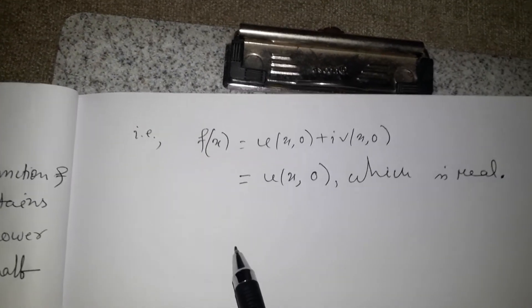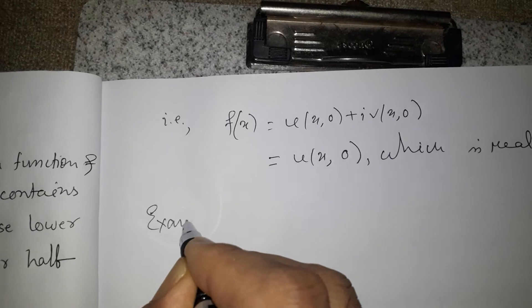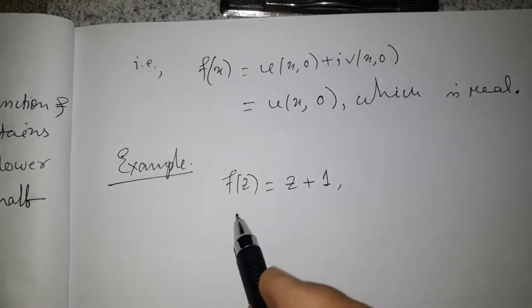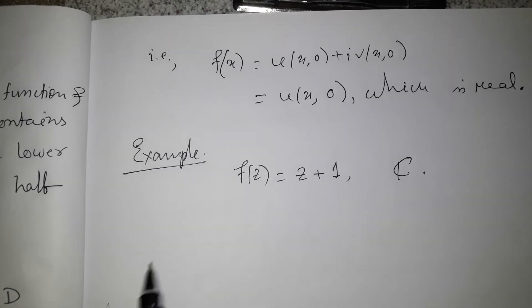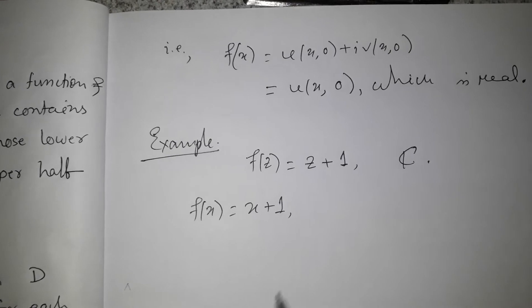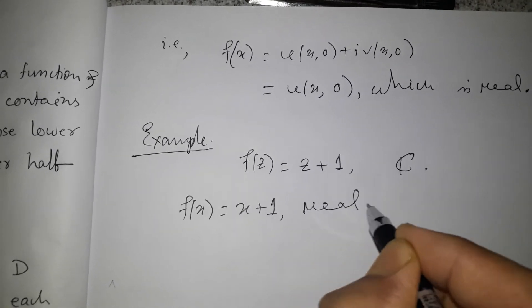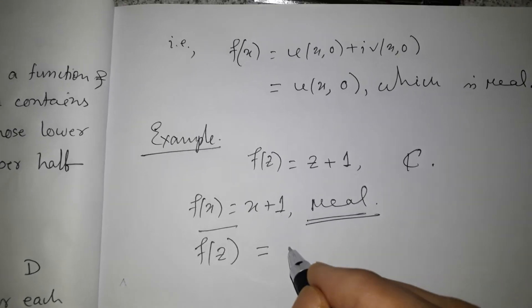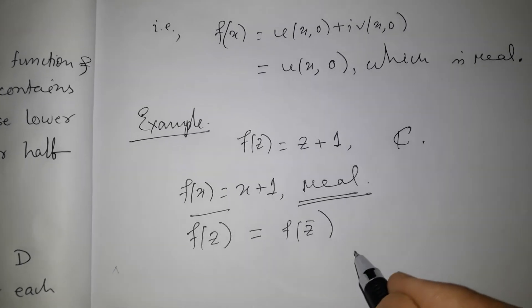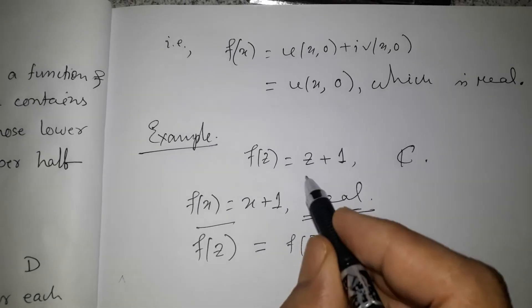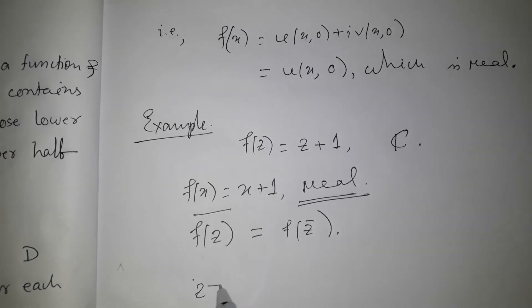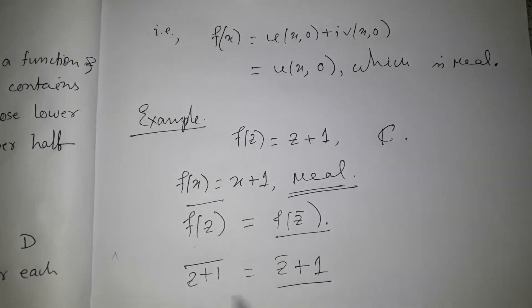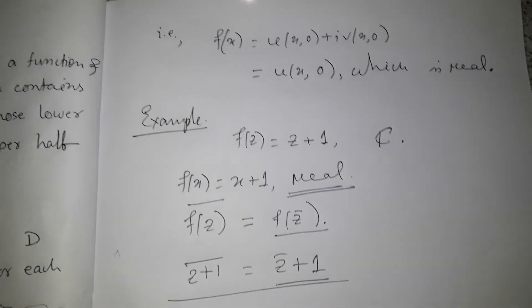For example, take f(z) = z + 1. This is analytic throughout the complex plane C. We see that f(x) = x + 1, which is real. Therefore for this function we have conj(f(z)) = f(z̄). You can verify this directly: the left side is conj(z + 1) = z̄ + 1, and the right side f(z̄) = z̄ + 1. Both sides are equal.